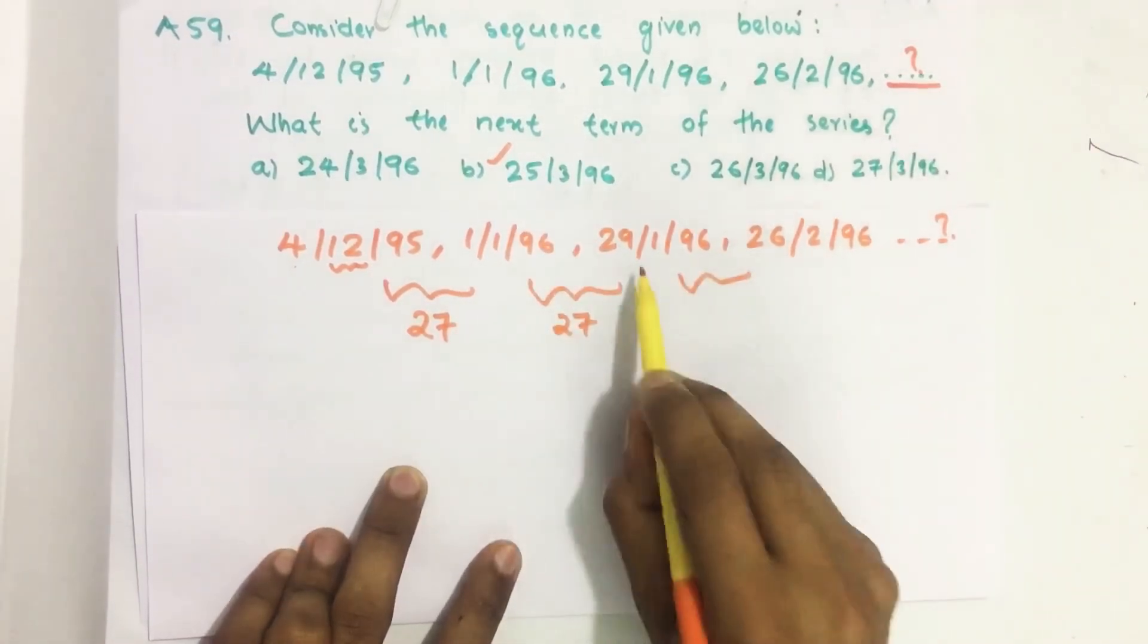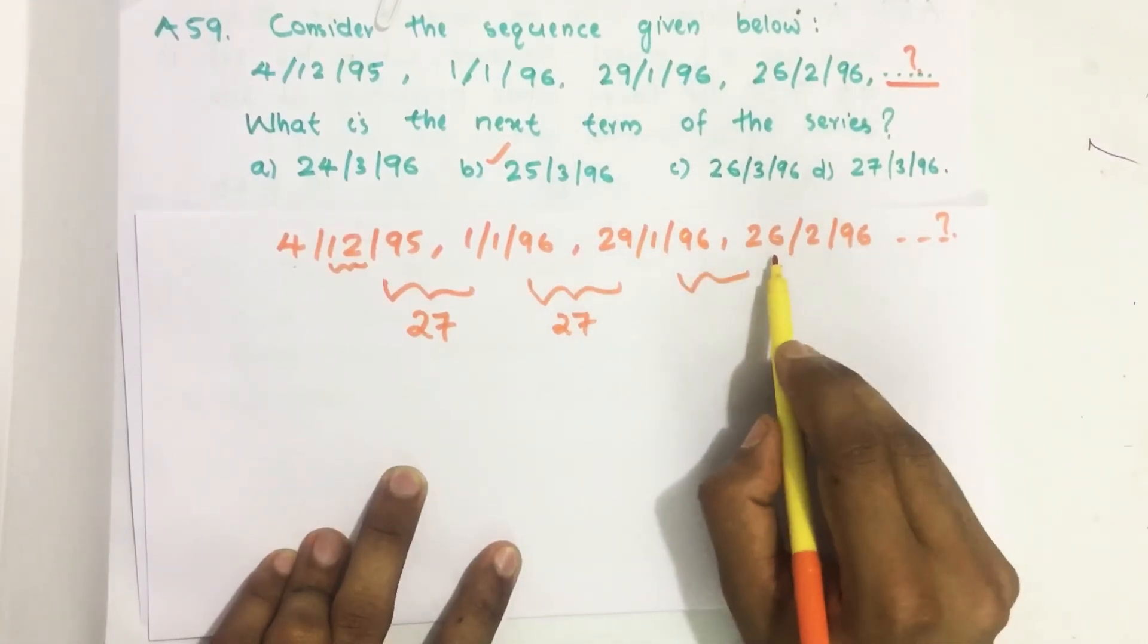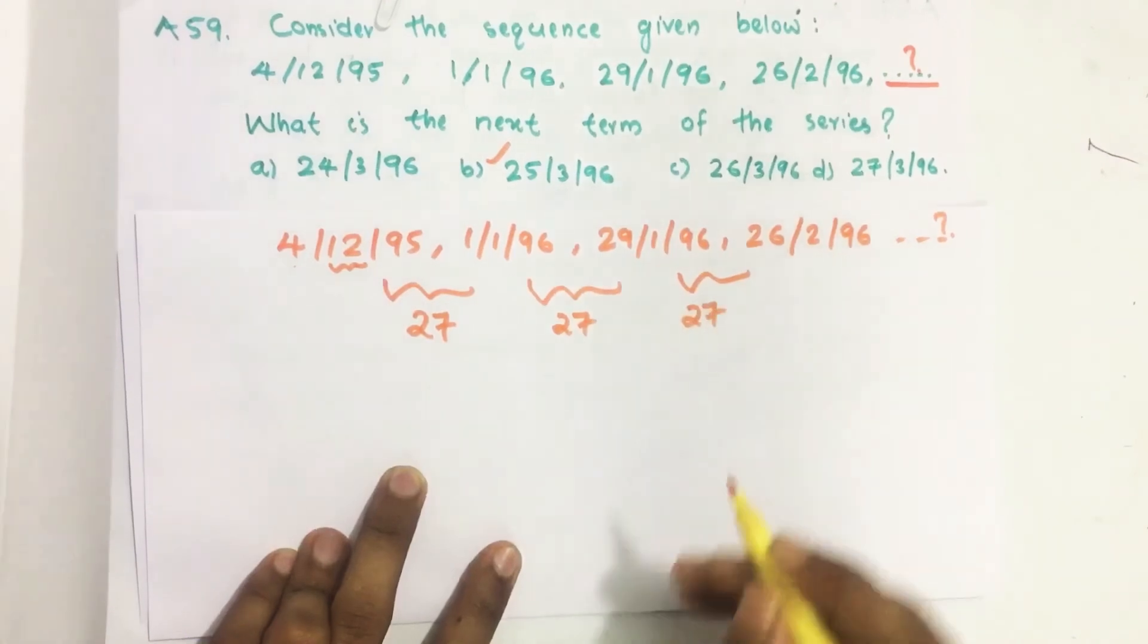Similarly here 29th January, January is a 31 day month to February 26, the gap is 27 days.